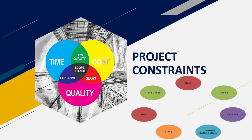That's why we have risk strategies and activities that we go through. Some of those strategies are going to be like accepting, mitigating, transferring, and avoiding the risks. Different risk activities involved here are going to be like the identification of the risks, planning for them, reviewing them, responding, and having the risk register.